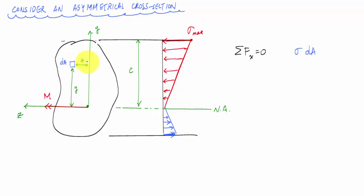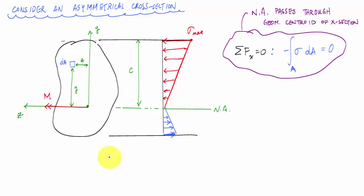And notice here on this location that I've chosen this dA at a positive y and a positive z that is in compression, so technically that would be a negative here, and I would integrate over the entire area and this would equal zero. And what this showed, at least previously, was that the neutral axis has to pass through the geometric centroid in order for this to be true.